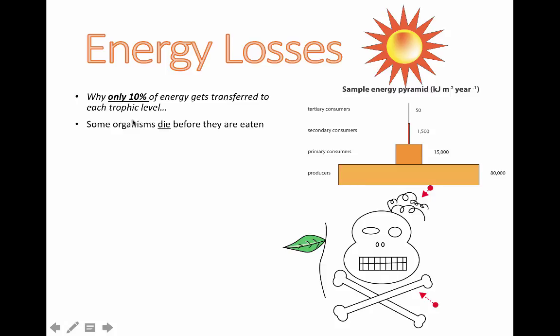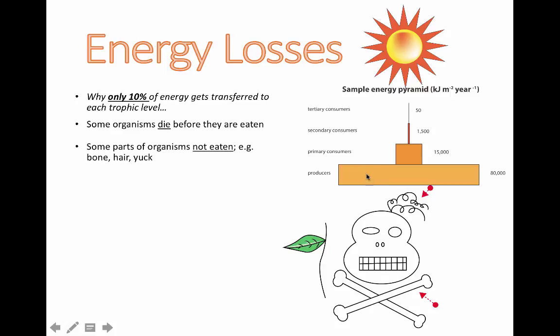Some of that energy is used for good things — it just doesn't make it to the next level. For example, some organisms actually die before they're eaten — hence the skull and crossbones here. If they die before being eaten, they don't make it up to the next trophic level. That energy can transfer to bacteria or other decomposers, but it doesn't go to the next trophic level.